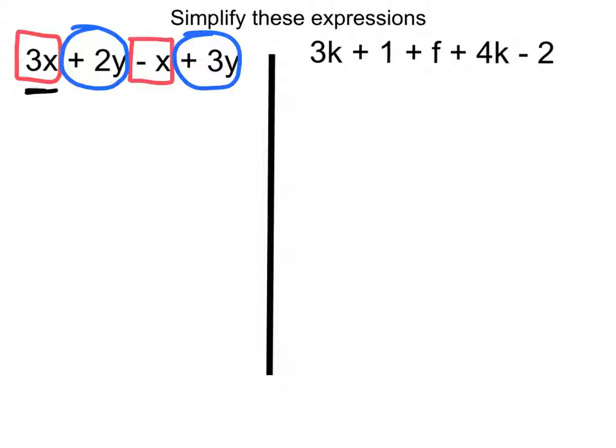Now, this reads as 3x minus x, so that becomes 2x, and plus 2y plus 3y is plus 5y. So that is that simplified. I've only got one x term and one y term.